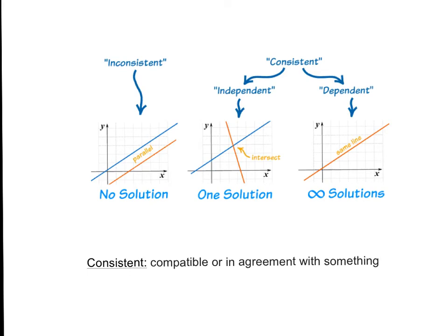A point is consistent because it agrees with both of the equations. Infinite points are consistent because infinite points agree or make both equations true. Within consistent systems of equations, we have independent, where there is one solution, and dependent, where the variables depend on each other, so we have an infinite number of solutions.